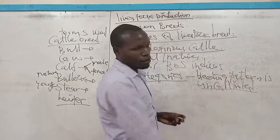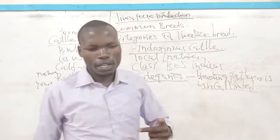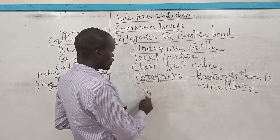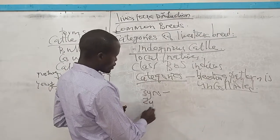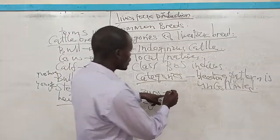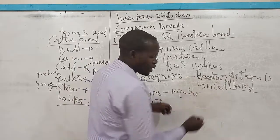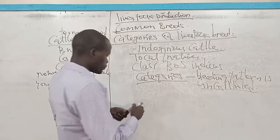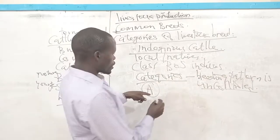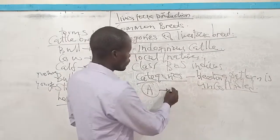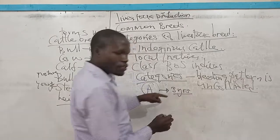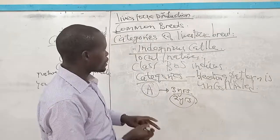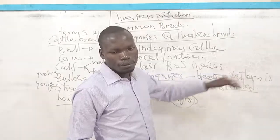What does this mean by saying that the breeding pattern is uncontrolled? This is because you cannot indicate the calving intervals of these cattle — some are going to take three years to calve, others two years, and even these intervals are not going to be regular. For instance, cattle A may calve after three years in one season and then after two years in the next, due to this variation.